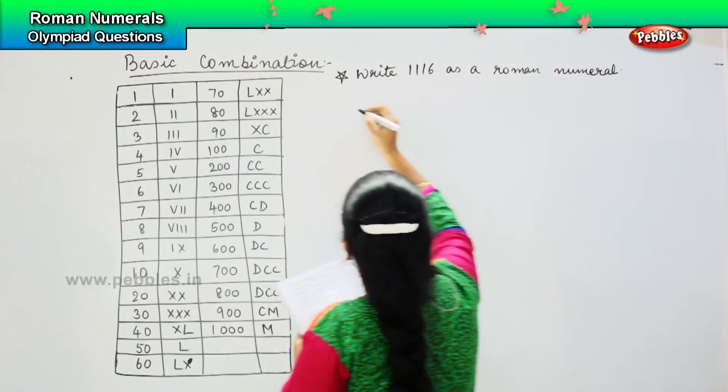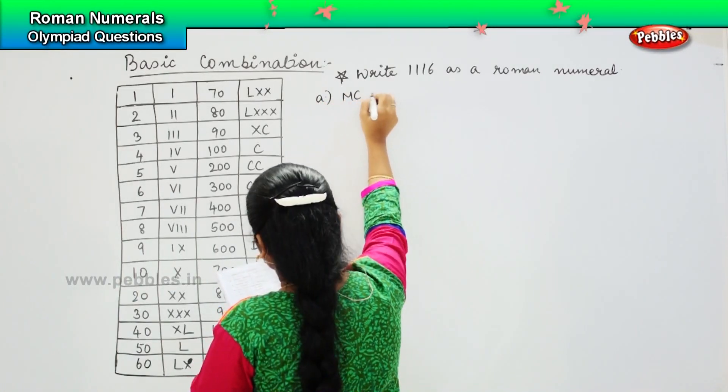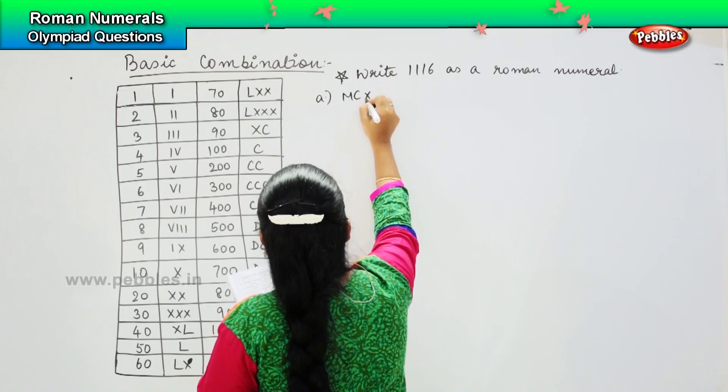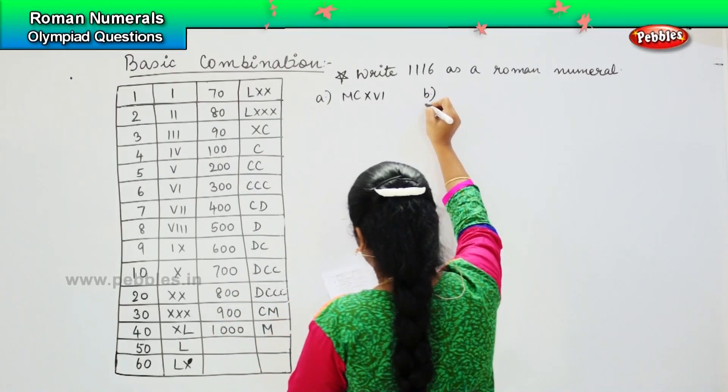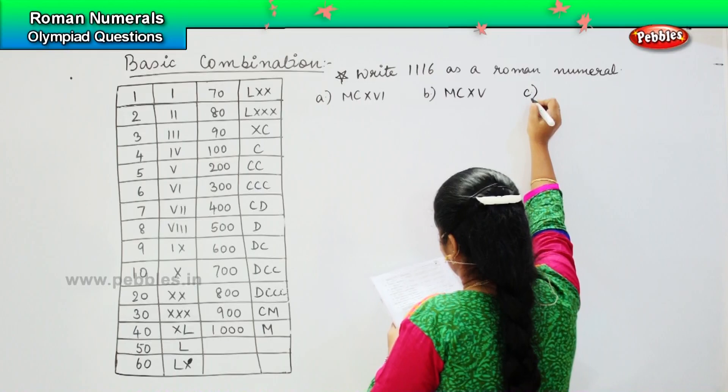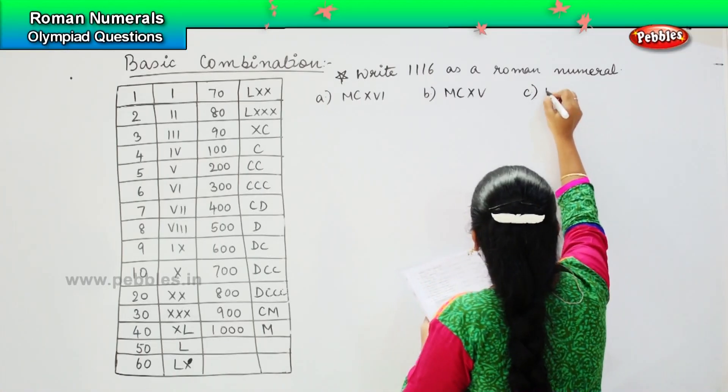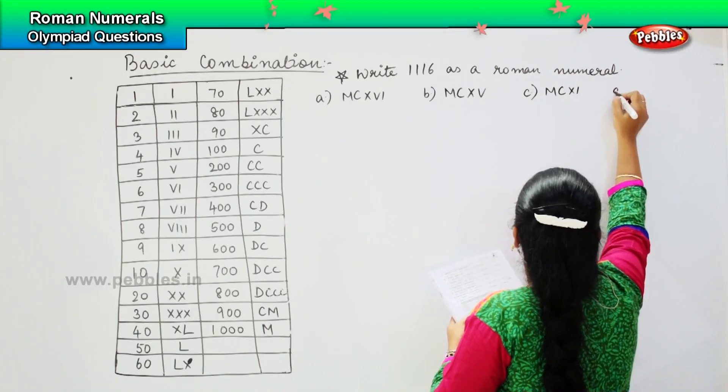Your options are: option A, MCXVI; option B, MCXV; option C, MCXI; and option D, CXIV.